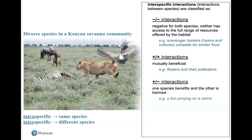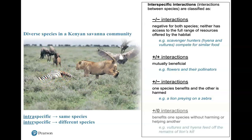A positive-negative interaction is where one species benefits and the other does not. The very obvious example here is that the lion benefits by killing and eating the zebra, while the zebra does not benefit at all — it's a positive-negative interaction. Another likely event is a positive-null interaction, where one species benefits and the other neither benefits nor is harmed.